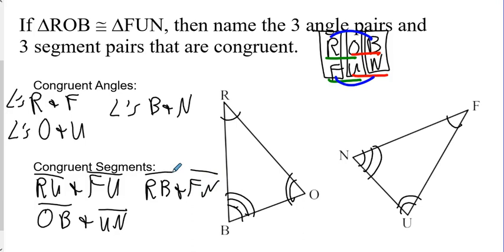So, now we're going to mark those. RO - that should be an O right here. RO. And then OB and UN. And that leaves this one congruent. That simple.